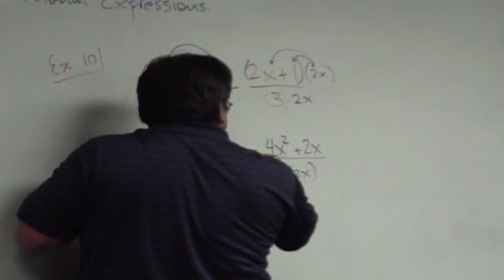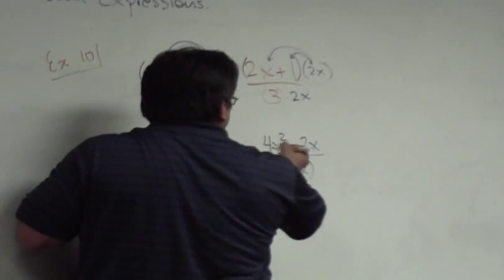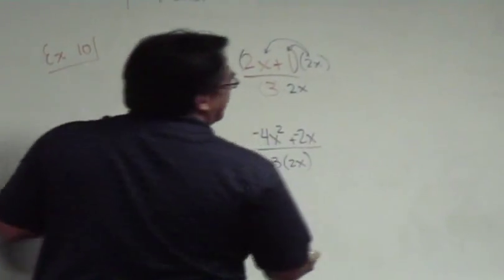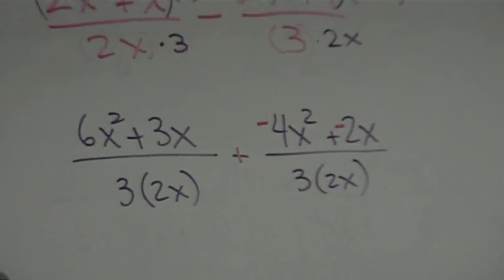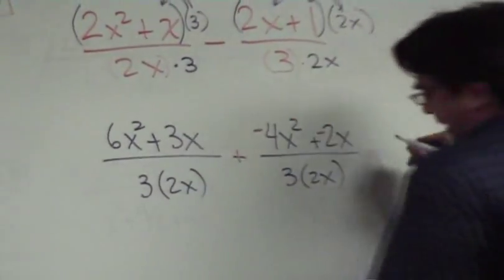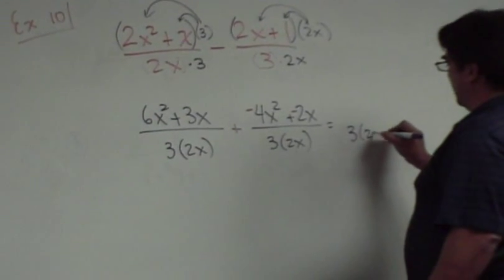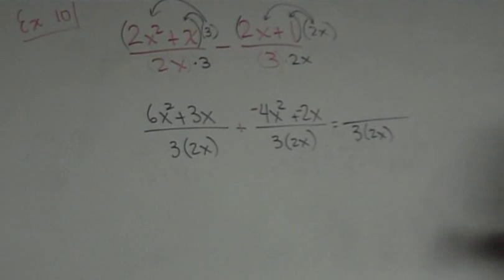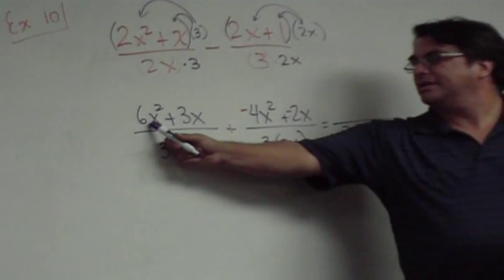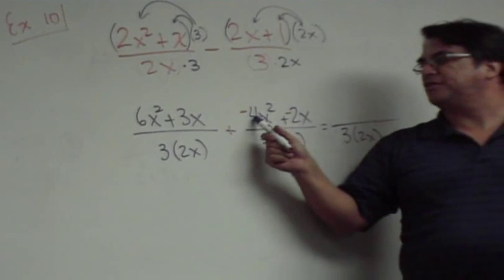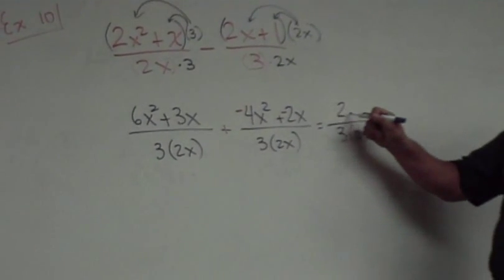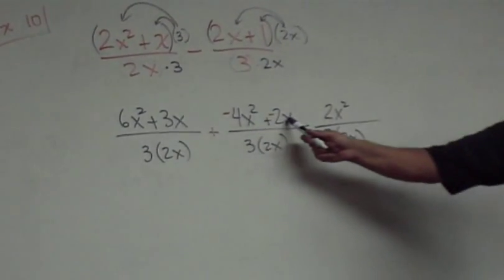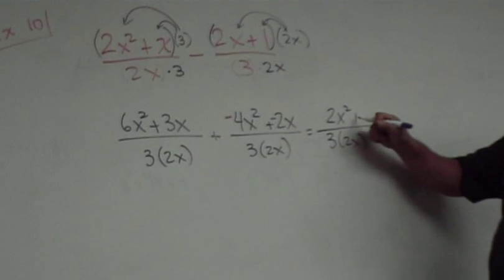Make this a plus. The 4x² becomes negative, and the positive 2x becomes negative. Now just combine like terms over the denominator — I'll leave it as 3 times 2x for now. 6x² minus 4x² is 2x². 3x minus 2x is positive x.